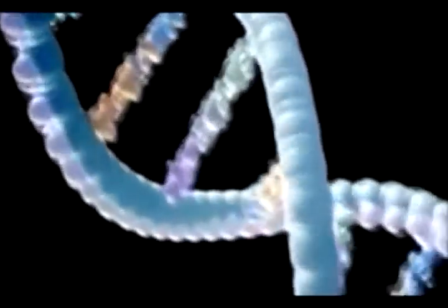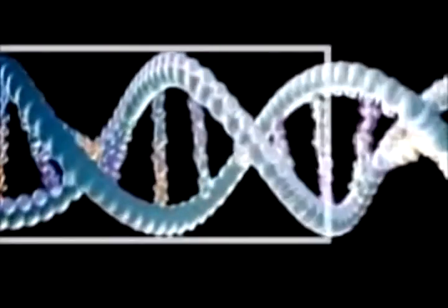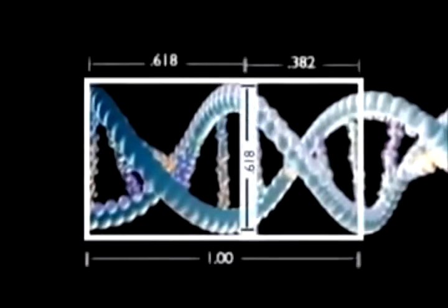The DNA molecule, the code for life, is made up of two intertwining spirals. We find the 0.618 ratio between the helix's width and cycle length.